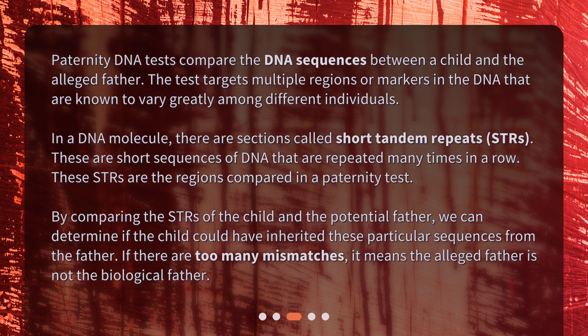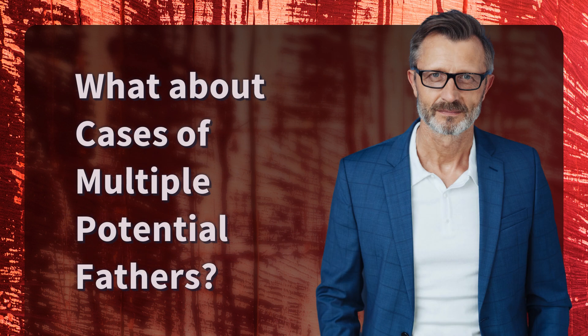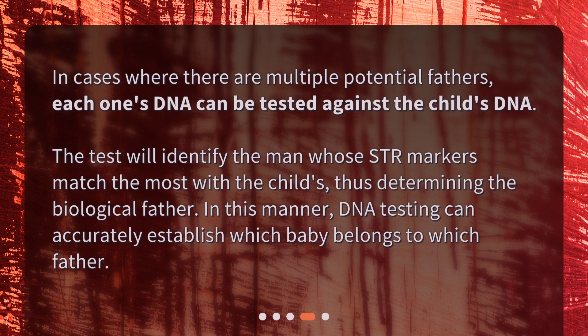If there are too many mismatches, it means the alleged father is not the biological father. In cases where there are multiple potential fathers, each one's DNA can be tested against the child's DNA. The test will identify the man whose STR markers match the most with the child's, thus determining the biological father. In this manner, DNA testing can accurately establish which baby belongs to which father.